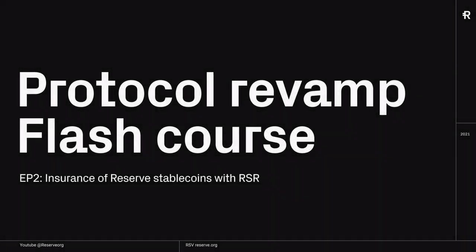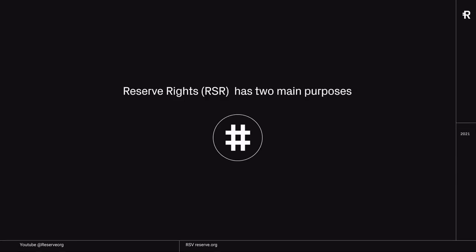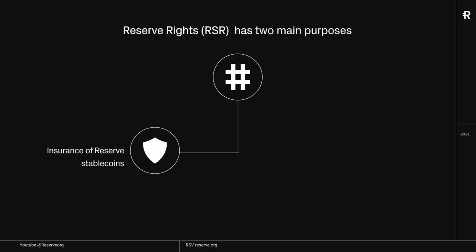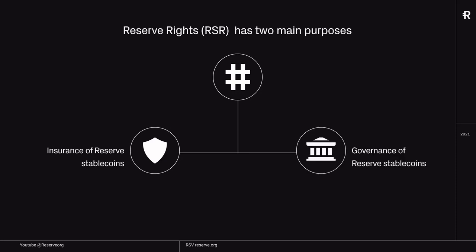Hello everyone, this is Sinatra from the Reserve Team and welcome to the second episode of the Protocol Revamp Flash Course. In this episode, I'm going to walk you through the use cases of RSR and especially how it's used to ensure Reserve Stablecoins. Reserve Rights or RSR is the secondary token in the Reserve Protocol and it has two main purposes: it is used to ensure Reserve Stablecoins — or R tokens — and it is also used to govern those Reserve Stablecoins. In this episode I will be focusing on the insurance part and in the next I will be talking about the governance.